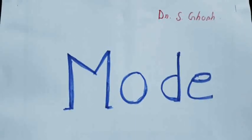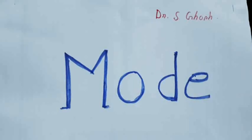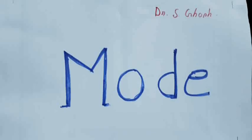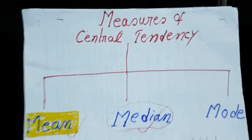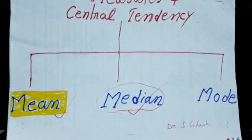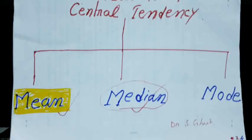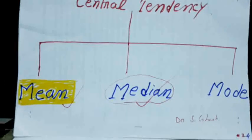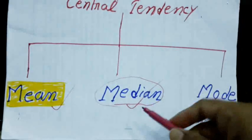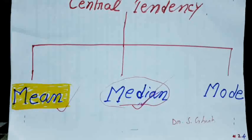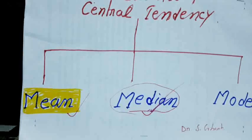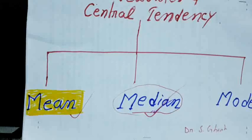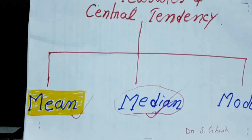Hello students, this is Shubrata Ghosh. Today I will be taking a class on mode. If we recall our previous classes, central tendency has three measures: mean, median, and mode. I have made eight videos on mean and two videos on median. Today I will take the class on how to calculate the mode of a discrete series.